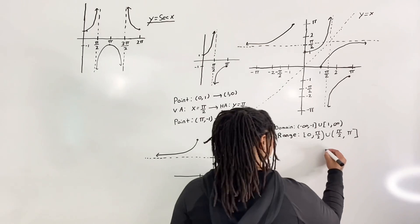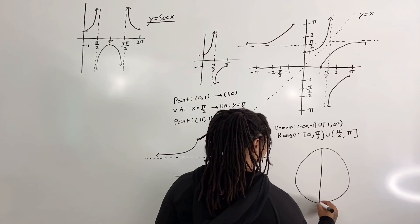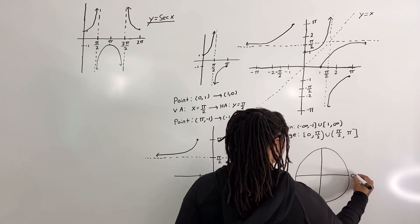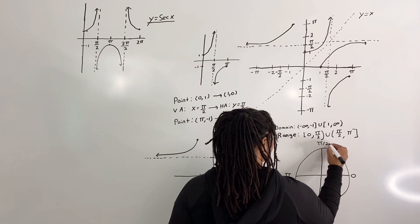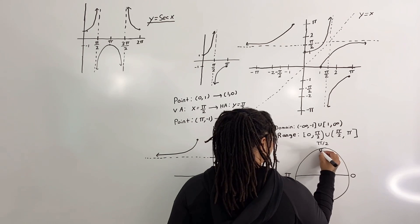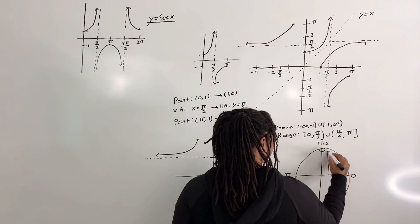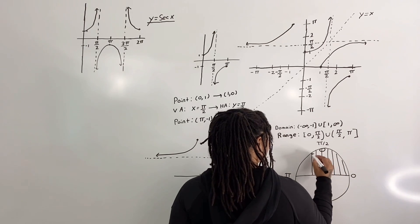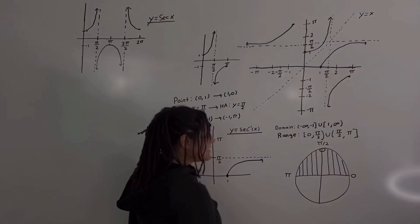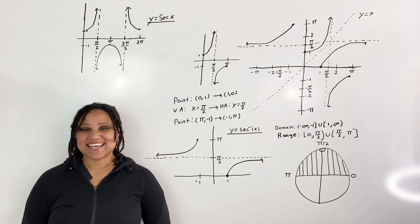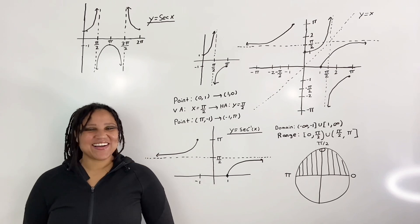If you were to look at this on a unit circle: here we have zero, here we have pi, and here we have pi over two. So we are not including pi over two but we can have all the values in the upper region of the unit circle when considering the range of inverse secant. And that is how you graph inverse secant and identify the domain and range. Thank you for watching and always remember that you are awesome.